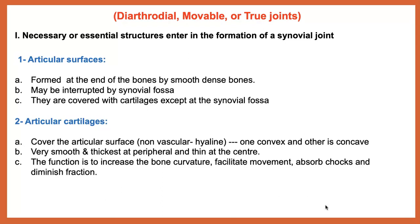Starting with the essential structures: first is the articular surface — any true joint must have two bones with smooth surfaces able to articulate. Second is the articular cartilage, which covers the articular surface of the bone. This is highly avascular cartilage that is important for increasing bone curvature, facilitating movement, absorbing shock, and reducing friction between the two articular surfaces.